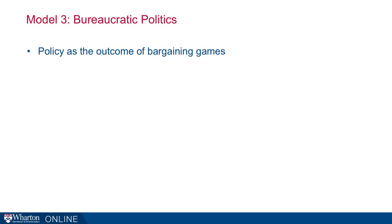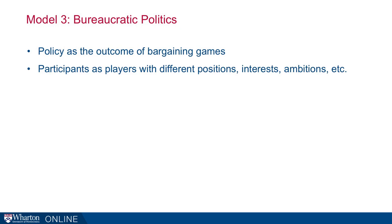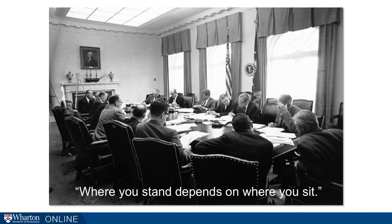The third model Allison suggests is bureaucratic politics. In this model, policy is the outcome of bargaining games. Organizations are participants — players with different positions, interests, and ambitions — and where you sit in the organization influences your decisions. Rather than a solitary actor making a single rational decision, the outcome is the output of all these different negotiations. A key quote captures it well: 'Where you stand depends on where you sit.'